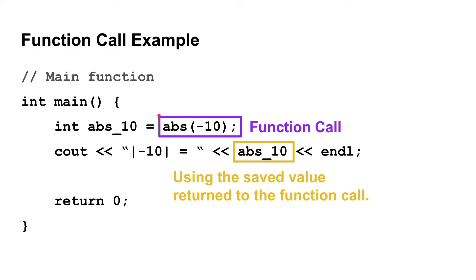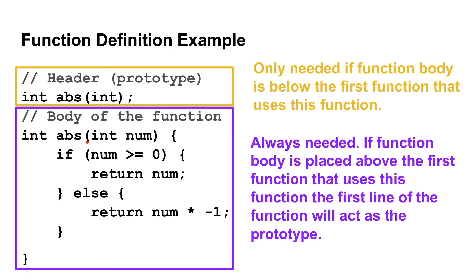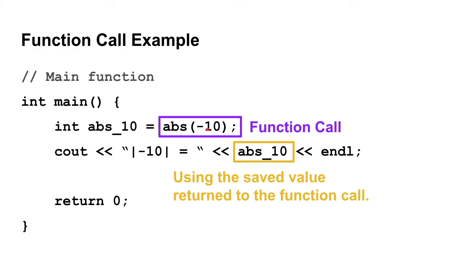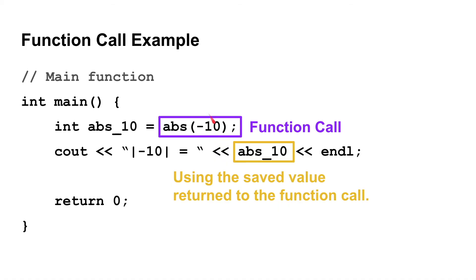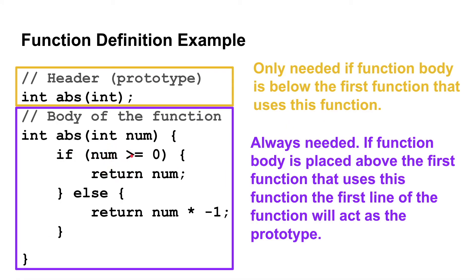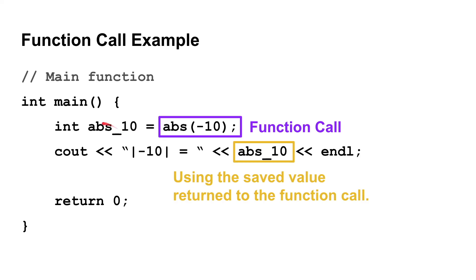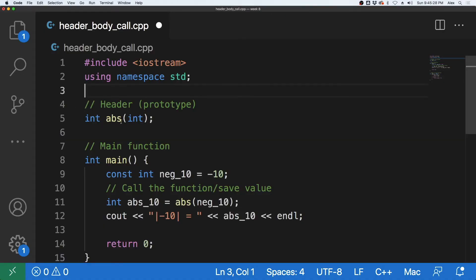So here we are calling this absolute value function, which we defined earlier. We are passing negative 10 as a parameter to the ABS function, which will be taken in as the variable num. We then test negative 10 in the if statement — since negative 10 is not greater than or equal to zero, it hits the else case, multiplies by negative one to make it positive, and returns that value to be saved in abs_10. Then abs_10 can be output later in the program.